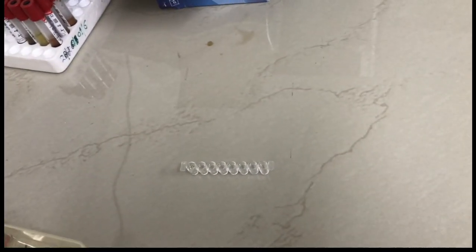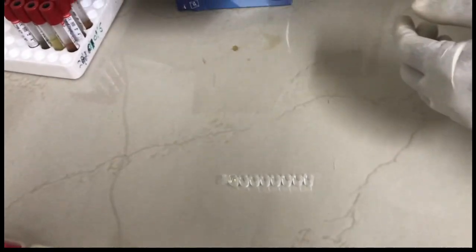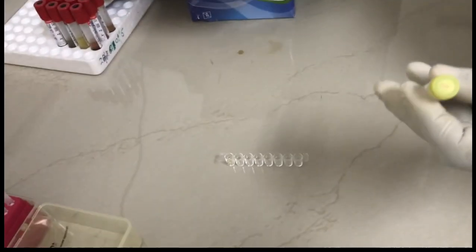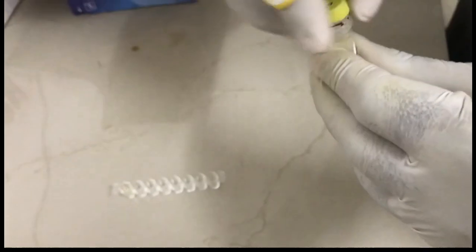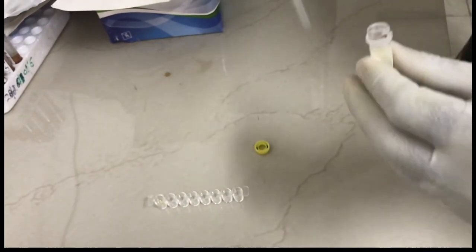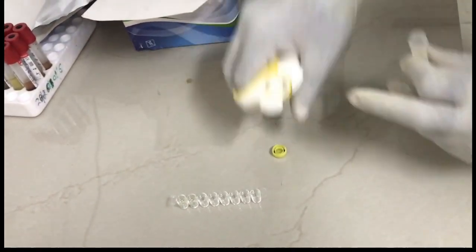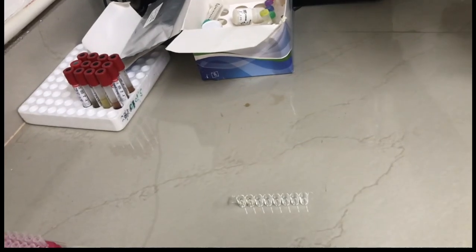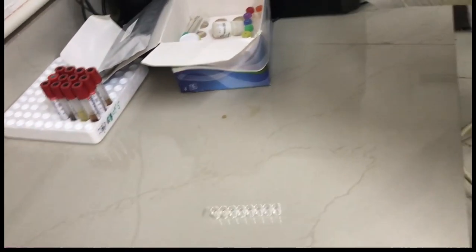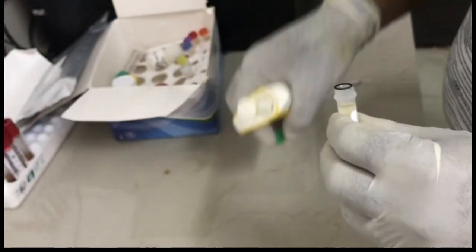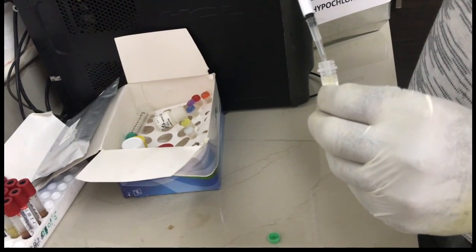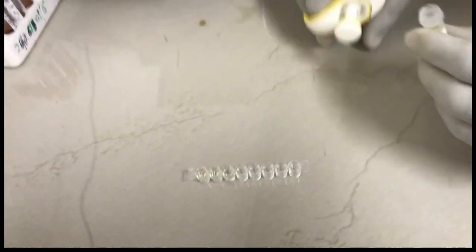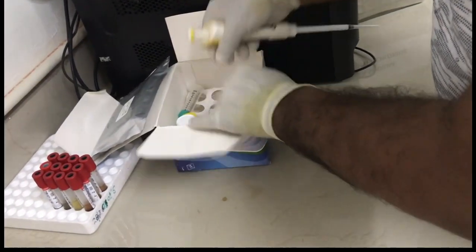Then we will discard the tip and take a new tip for it. Every time we have to discard the tip. Now here, this is control B, which we will take in the second well. We discard the tip every time, using a new tip each time. This is a potentially hazardous process, so we have to be very cautious while doing all these steps. This is control C, we are taking this control and putting it in the third well.